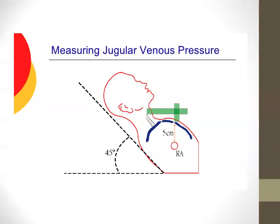To measure JVP, position the patient at 45 degrees. Use a pillow behind the head to relax the sternocleidomastoid muscles, and tangential lighting to better visualize. Find the highest point, use a rectangular straight object horizontally, then align with a centimeter ruler at the sternal angle — the angle of Louis. Add 5 cm to your measurement because the sternal angle is about 5 cm from the right atrium. Normal upper limit is 8 cm; anything above is abnormal.